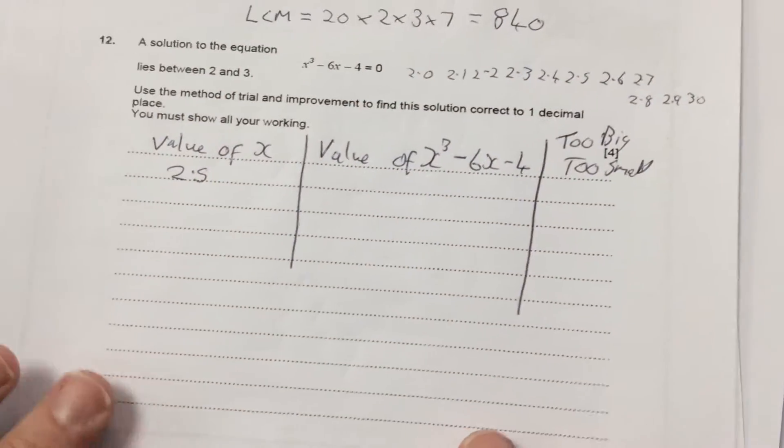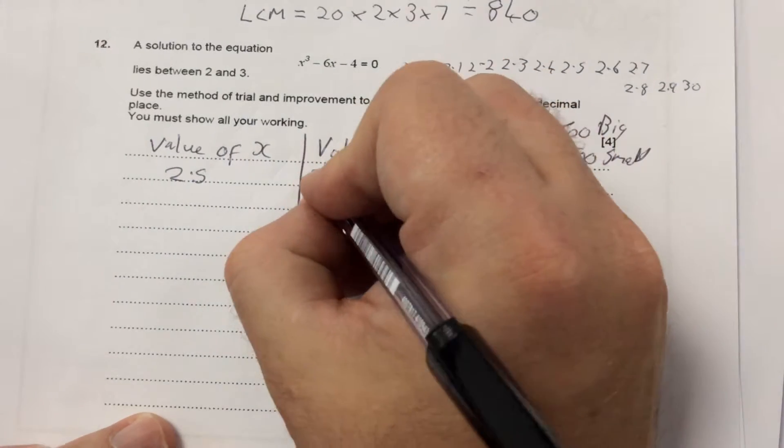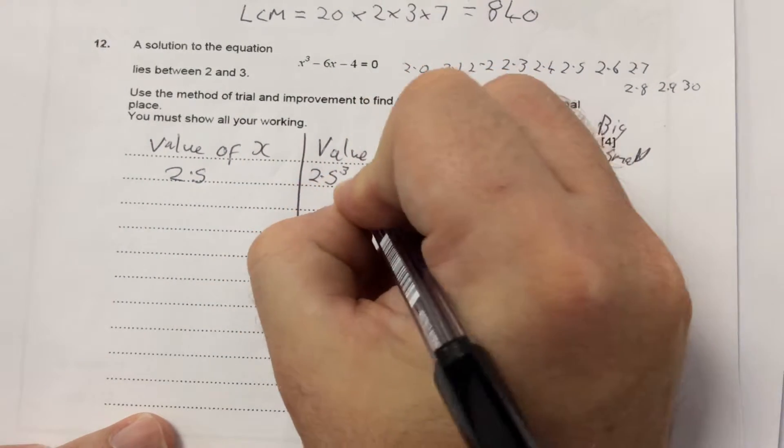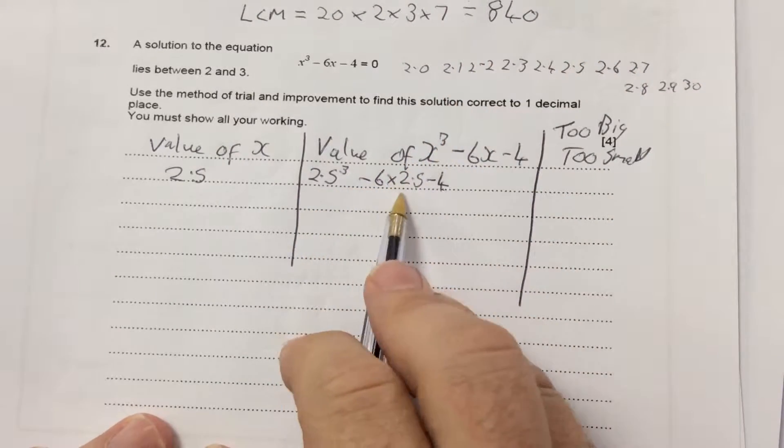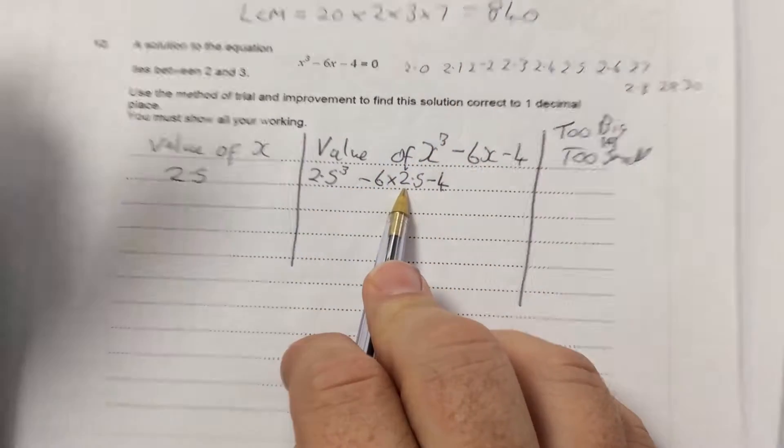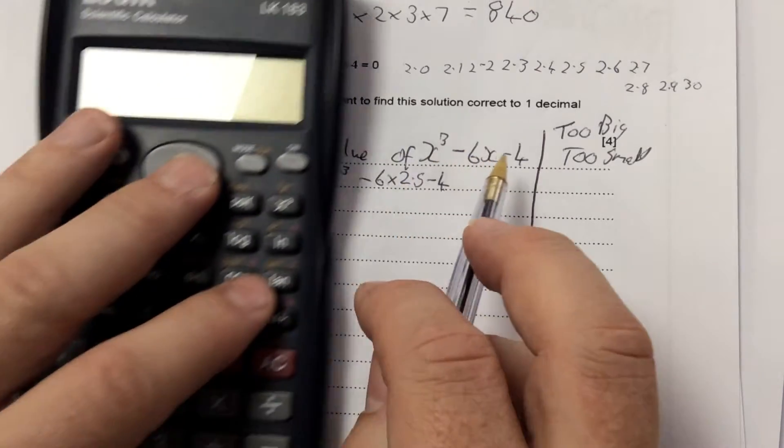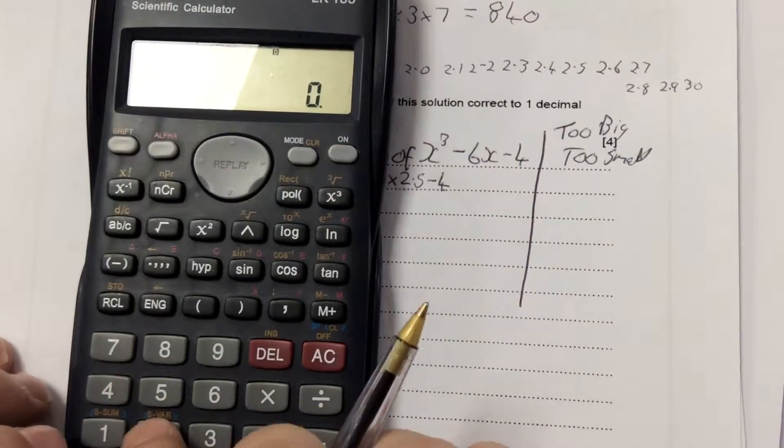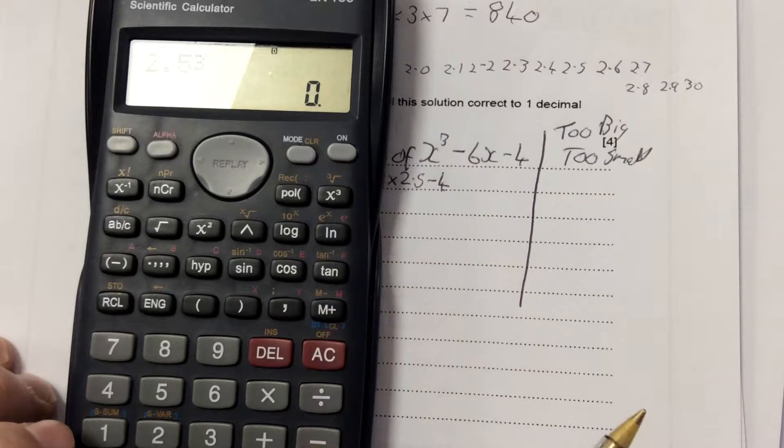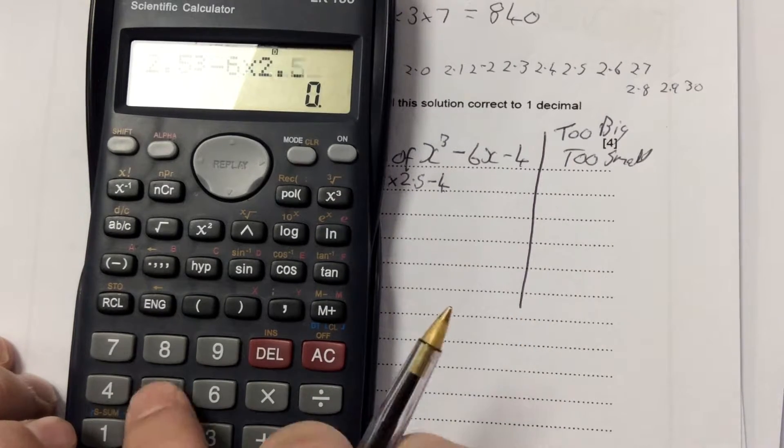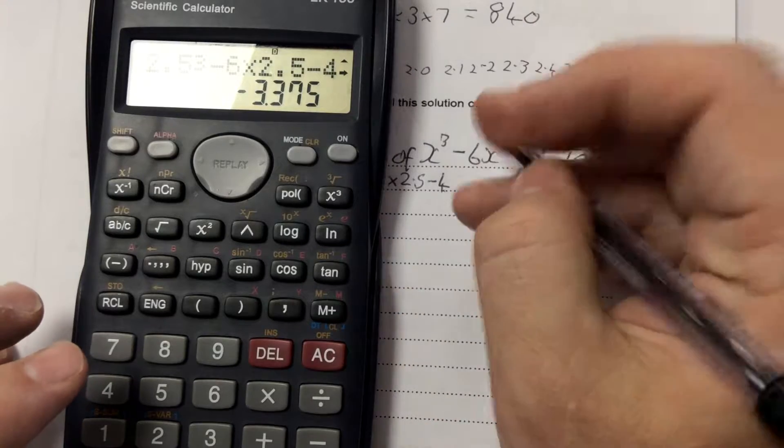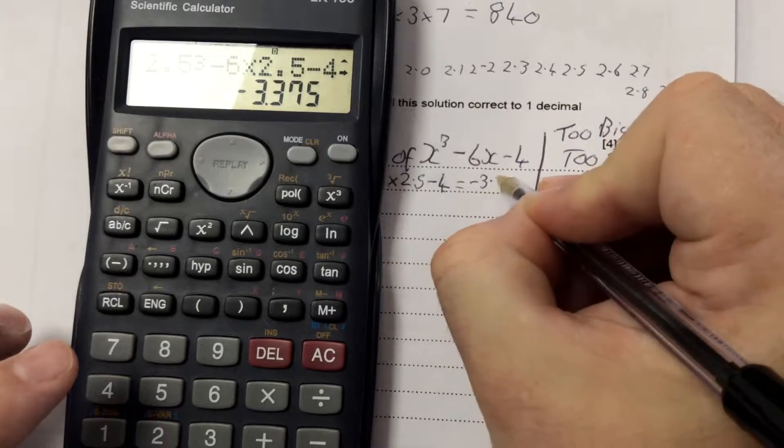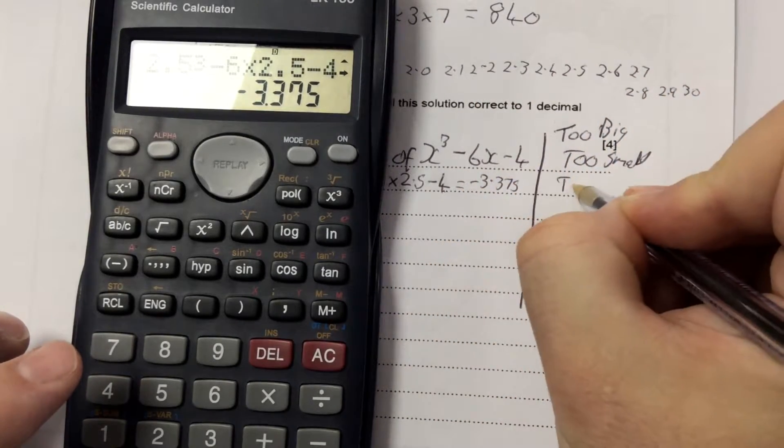Starting with 2.5, it becomes 2.5³ - 6 × 2.5 - 4. You've got to do the 6 times the number as well, so I'll put it as 6 × x. So when I'm doing this one, it becomes 2.5³ - 6 × 2.5 - 4. That one comes up as -3.375, so that's too small.